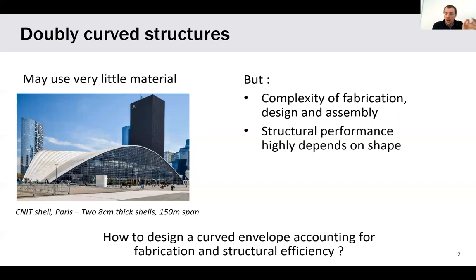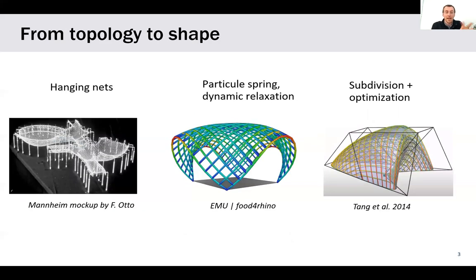We'll look more precisely at how they take shape and topology into account. There's the first big family of methods that will take topology as an input and give you resulting shapes based on the results of your optimization. That's the case of hanging nets, dynamic relaxation methods, subdivisions and optimization. If you change the topology, that is the connectivity, the pattern you use to connect your elements, you change the shape you obtain from the process.